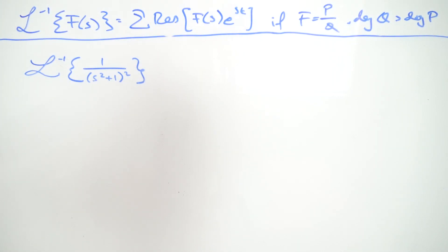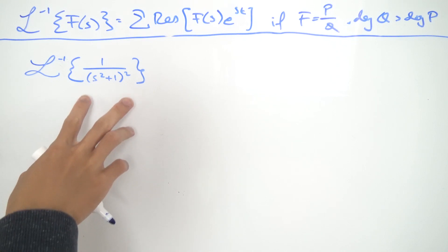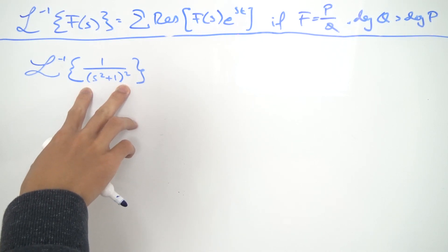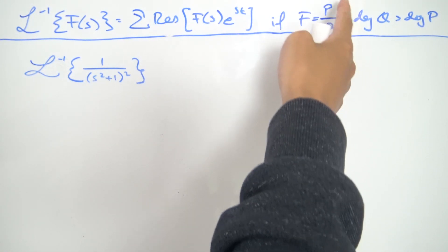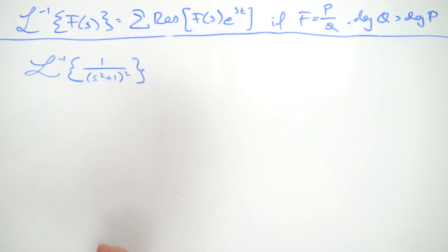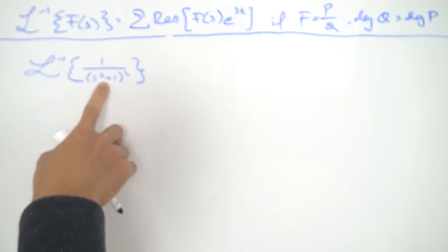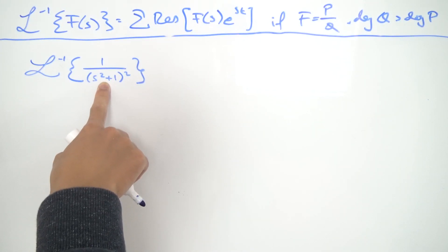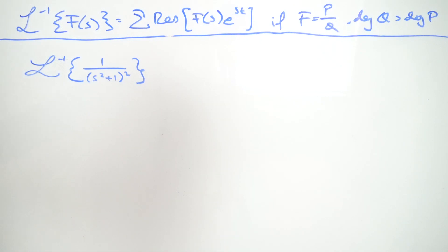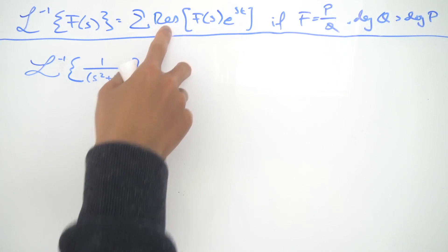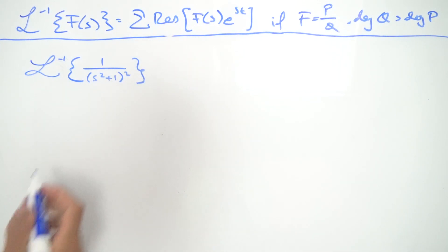We can use that formula for this function because it is of the form p divided by q, where p and q are polynomials, and the degree of the denominator is greater than the degree of the numerator. To apply this formula, we first have to know where the poles are so we can calculate the residues.